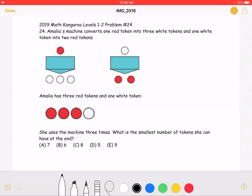Let's start by rewriting the tokens that she has as letters so we can work with them easier. Let's let the red tokens be symbolized with an R and the white tokens with the W. So she starts with three R's and one W.